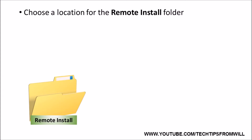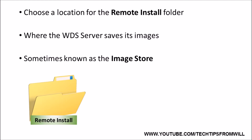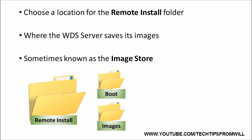If you think back to our last lesson, whilst configuring the WDS server, I was asked to choose a location for the remote install folder. The remote install folder is where the WDS server saves its images. This is why, in some Microsoft literature, the remote install folder is commonly referred to as the image store. The remote install folder contains two important subfolders: the boot subfolder and the images subfolder. The boot subfolder contains all of the boot images, whilst the images subfolder contains all of the install images.